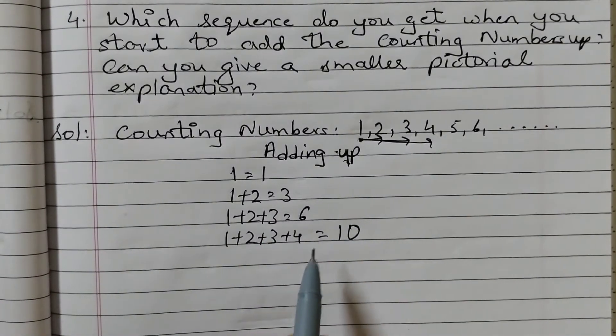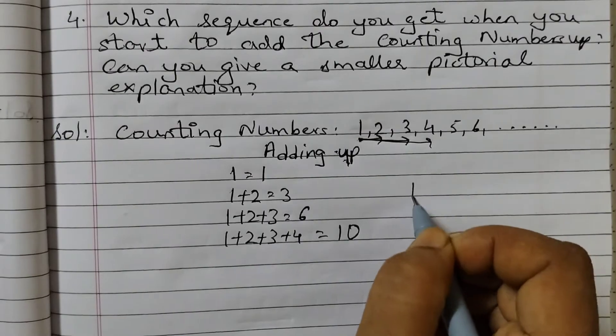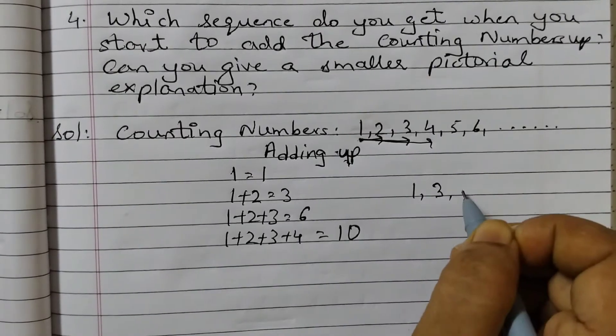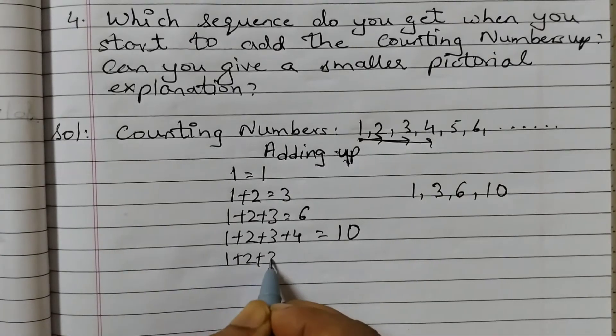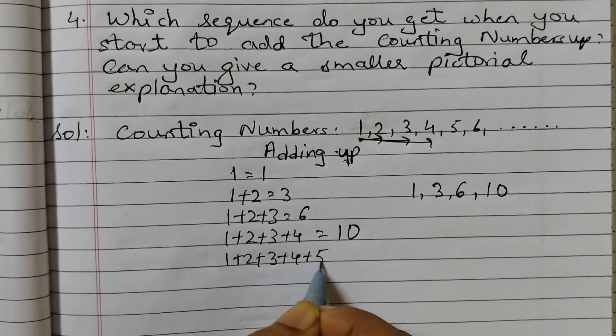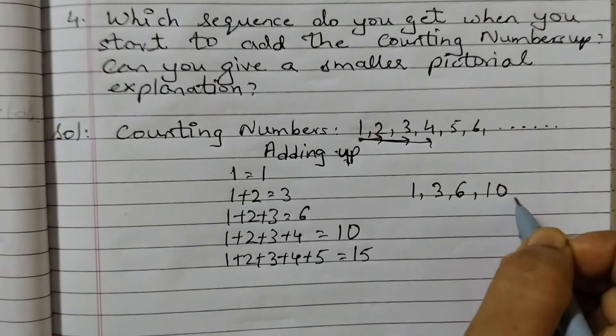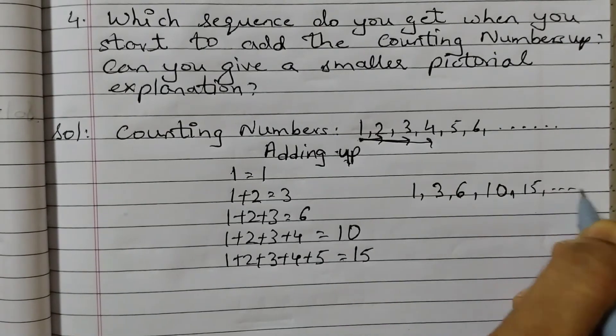So this is called numbers adding up. Now what do we get? We get 1, 3, 6, 10. If we add the next number we will get till 5 equals to 15. Ok we can add 15 also.